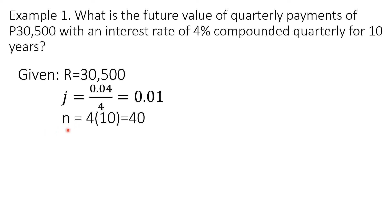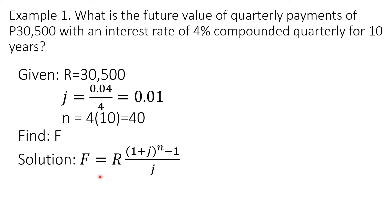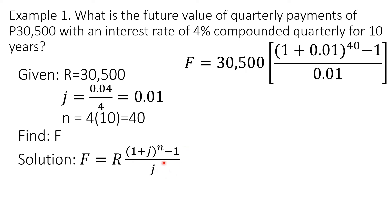The value of N, the number of payments, is M times T — the period is 4 because it is compounded quarterly, and the time is 10 years — so N equals 4 times 10, which is 40. We will solve for the future value F using the formula F equals R times (1 plus J) to the N, minus 1, over J. By substitution, R is 30,500, J is 0.01, and N is 40.